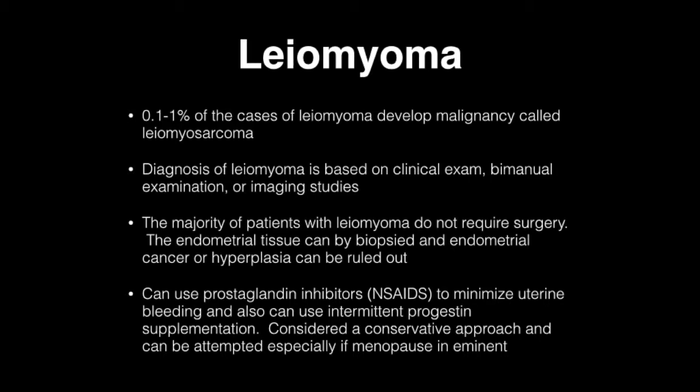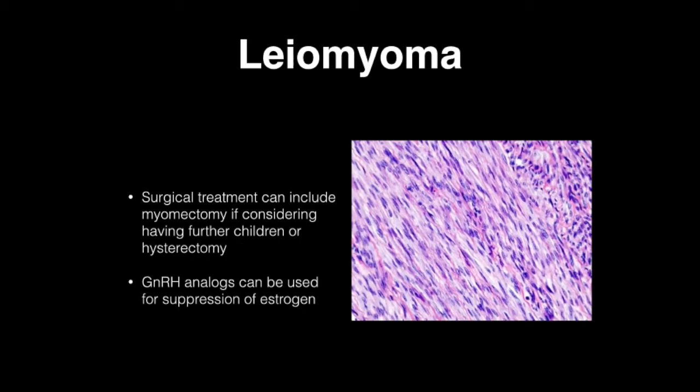The use of prostaglandin inhibitors such as NSAIDs to minimize uterine bleeding, and also intermittent progesterone stimulation, are the hallmarks of therapy. A conservative approach can be attempted, especially if menopause is imminent. Surgical treatment can include myomectomy if the patient is considering having further children, or hysterectomy. GnRH analogs can be used for suppressive therapy of estrogen.